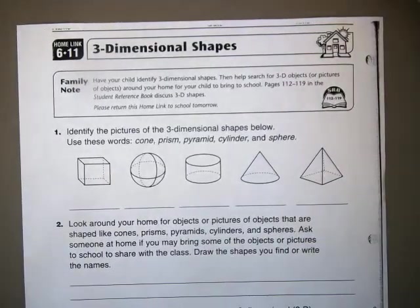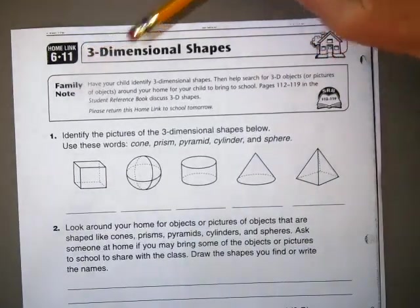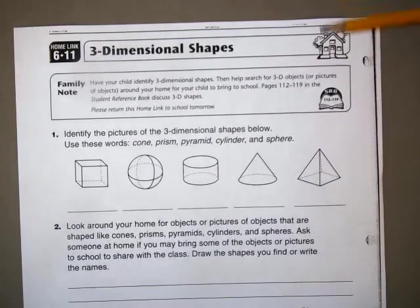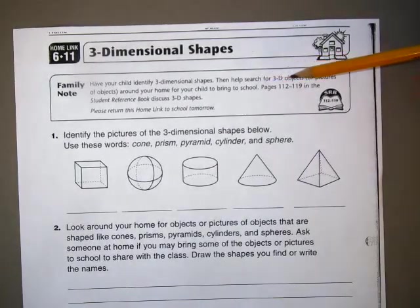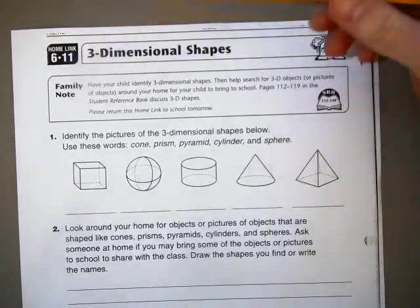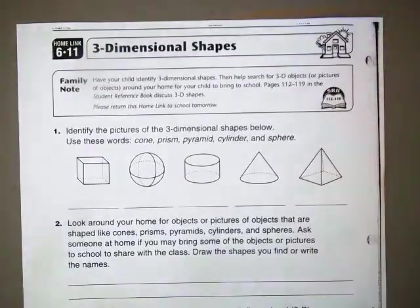This is Homelink 6-11, 3-Dimensional shapes. Have your child identify 3-Dimensional shapes. Then help search for 3D objects or pictures of objects around your room for your child to bring to school.